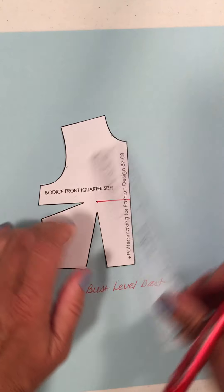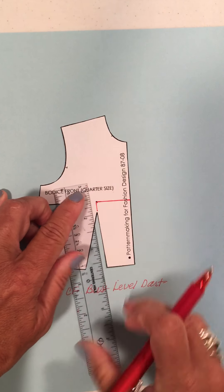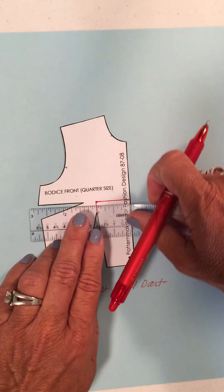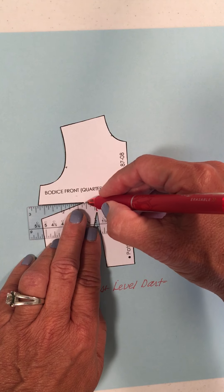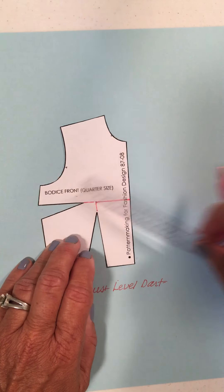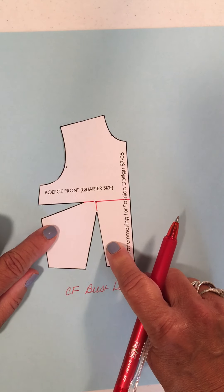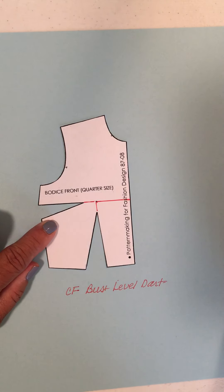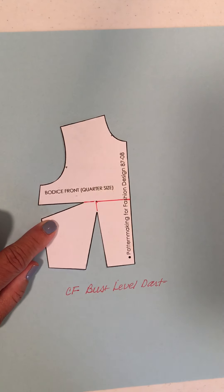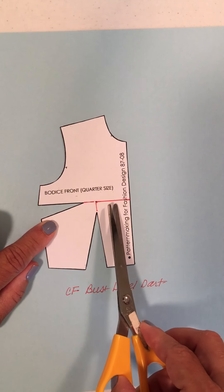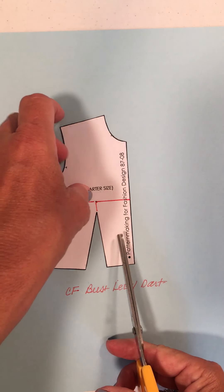I'm going to close all that up and I can put everything into one. So I can take my two dart quarter size sloper and I can turn everything into one, but I have to slash it a couple of times.